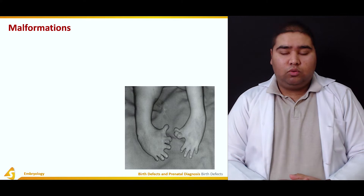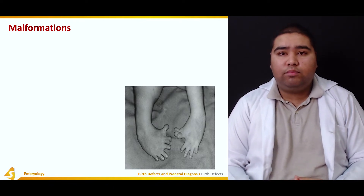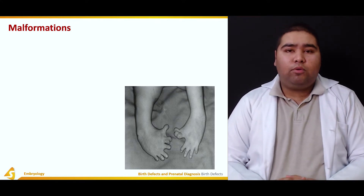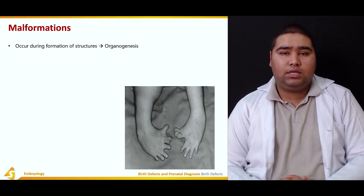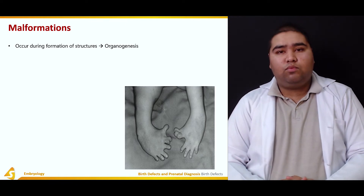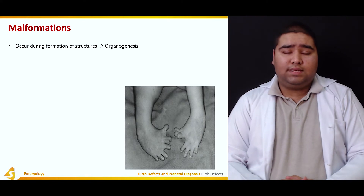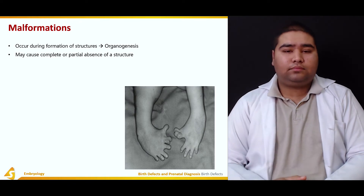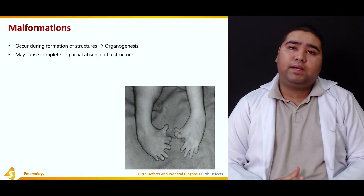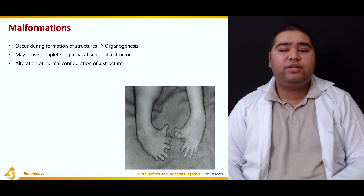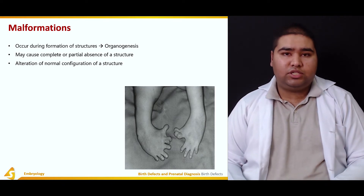What are malformations? As the name suggests, 'mal' means improper and 'formation' means to make — so it literally means improper making. It occurs during the formation of structures, that is, during the period of organogenesis, which is between the third and eighth week of fetal development. They may cause partial or complete absence of a structure — it may be a limb or a finger — and there is alteration of the normal configuration of a structure.